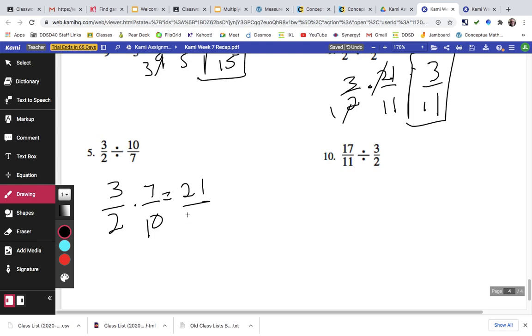So 7/10 is the reciprocal of 10/7. Oops, that's 1 and 1/20. So that's 1 and 1/20. And finally, 17/11 times 2/3. I don't have any shared factors, so that's just going to be 34/33.